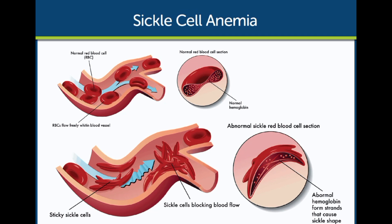Sickle cell anemia, HBSS, is the most common and severe form of sickle cell disease. People with HBSS inherit two copies of the sickle cell gene, one from each parent. This results in the production of mostly abnormal hemoglobin, hemoglobin S, which causes red blood cells to become stiff and sickle-shaped.